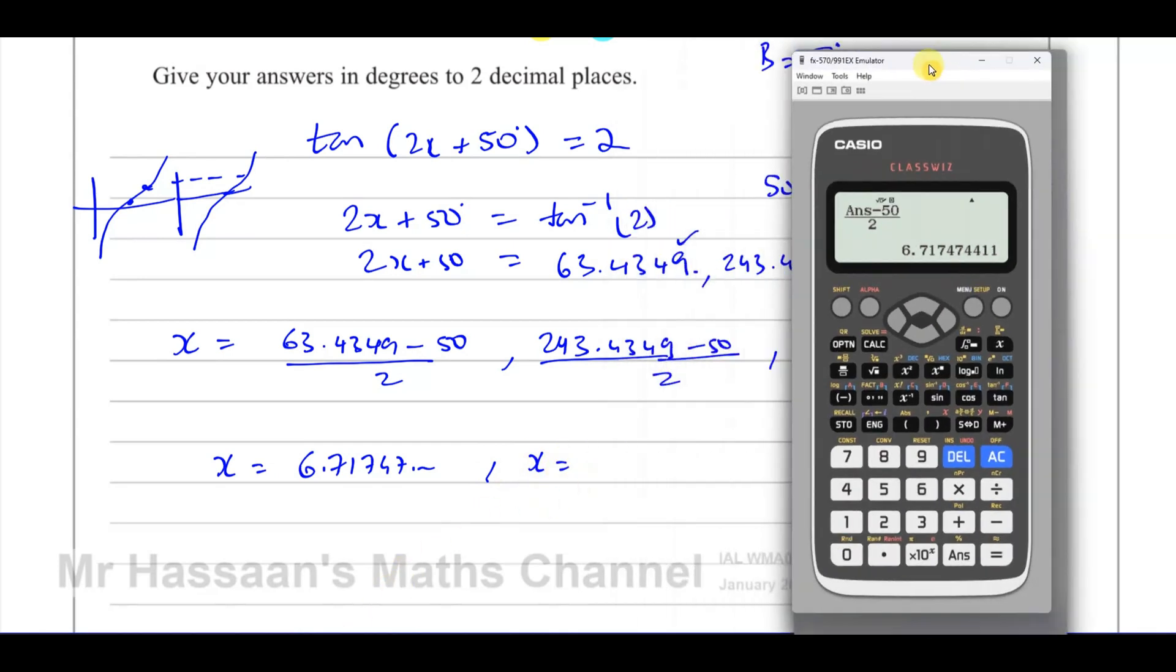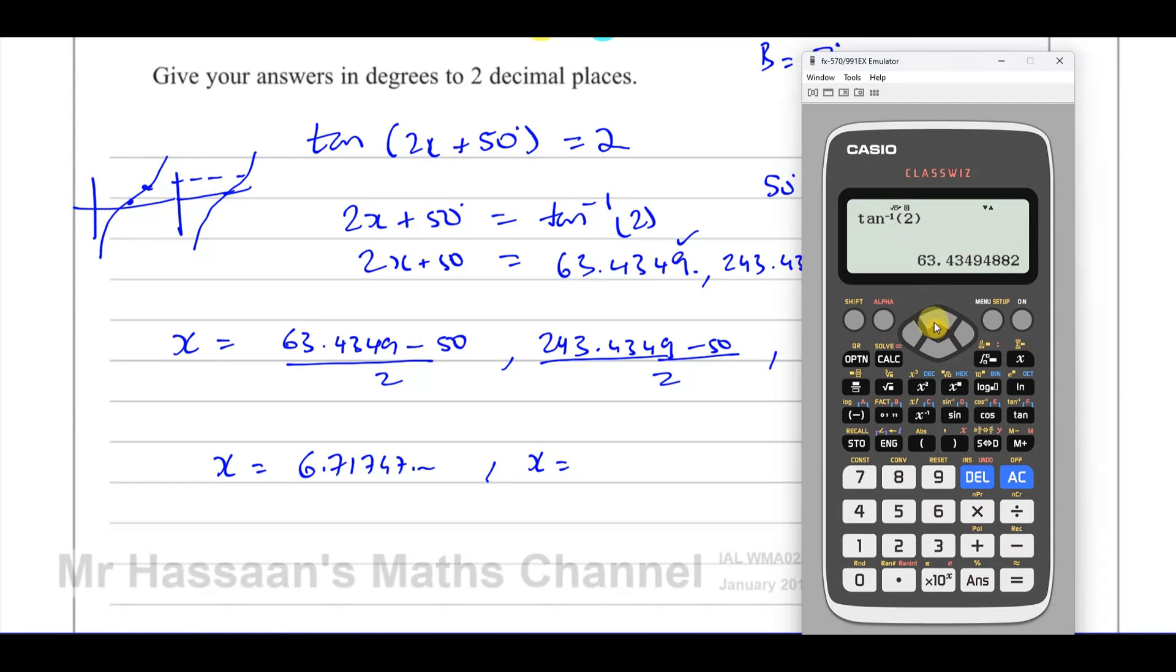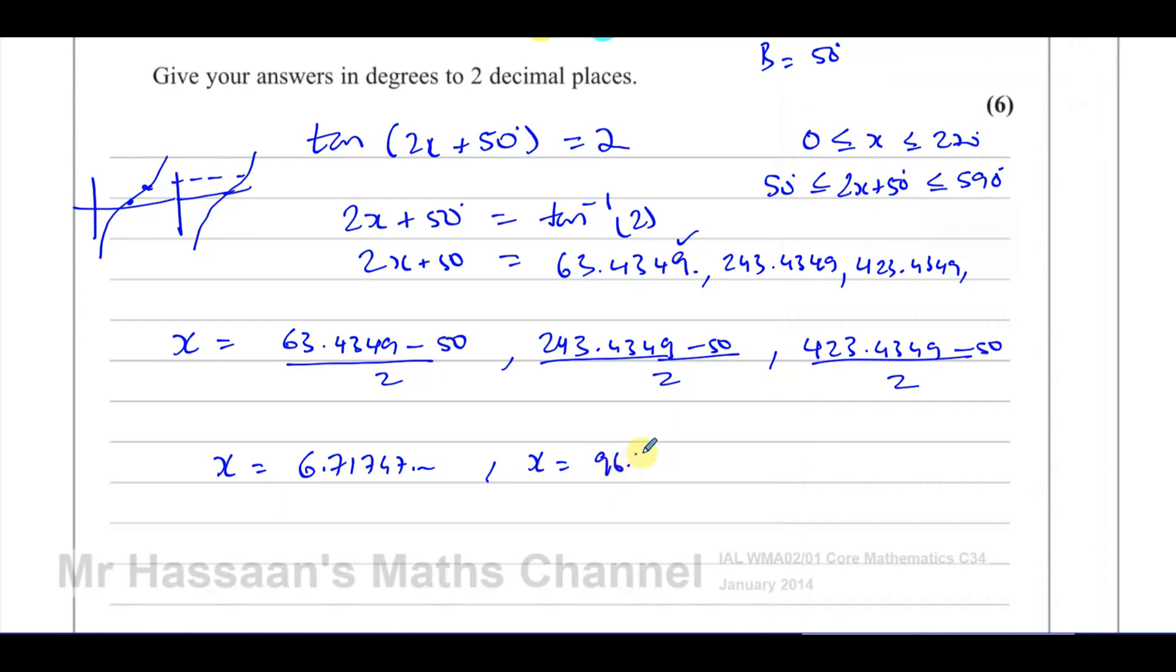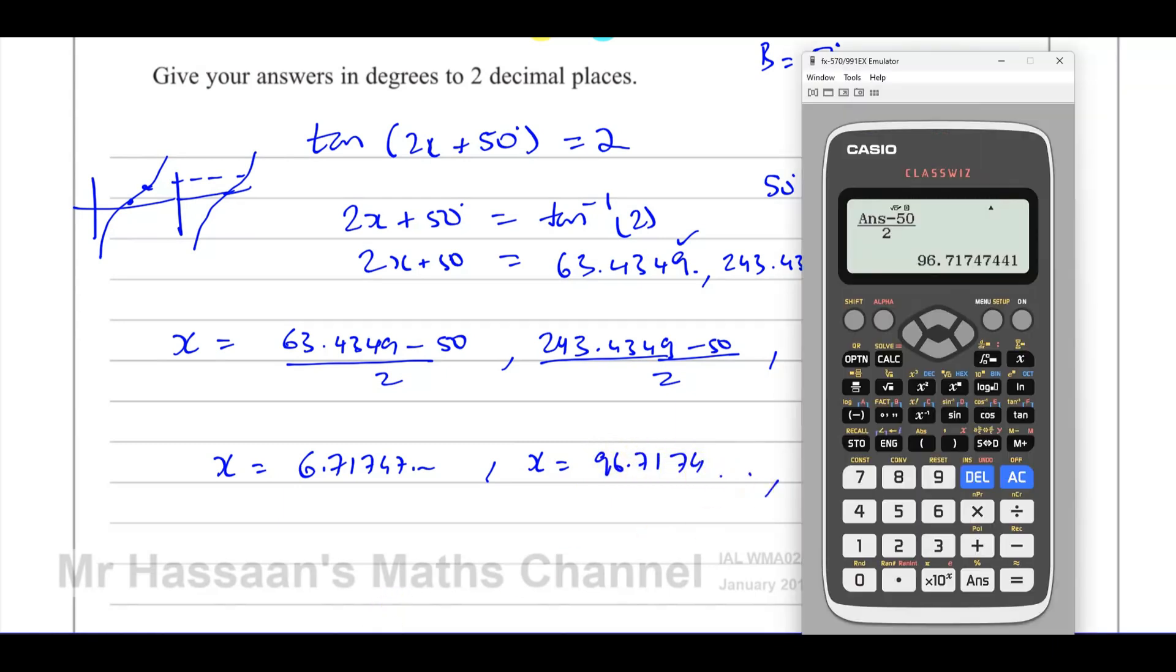And then we're going to go back to this. We add 180 to it. And then we'll put the answer minus 50 divided by 2, which gives us 96.7174.